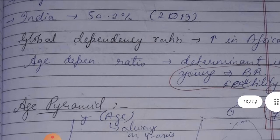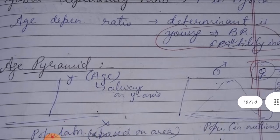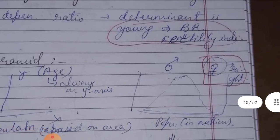Globally, the age-dependency ratio is highest in Africa. We can see an indirect relationship between the dependency ratio and fertility rate.